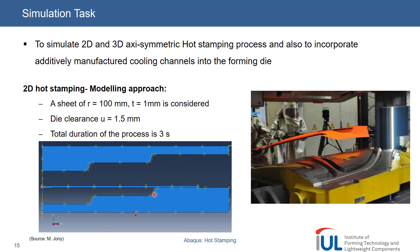The die clearance — the horizontal distance if the upper and lower die would be in full contact between these two edges — would be 0.5 millimeters. The total process duration is three seconds: two seconds for the upper die moving down and finishing the forming operation, and one second for retraction of the upper die releasing the sheet after forming.